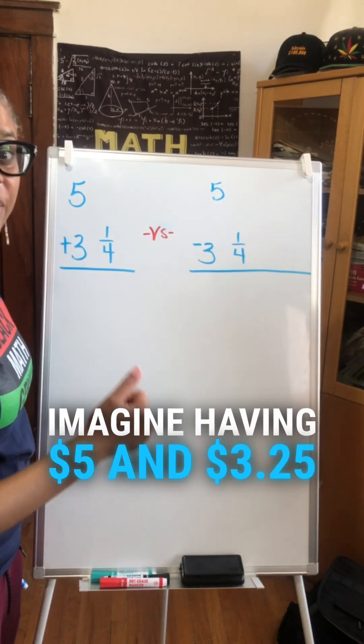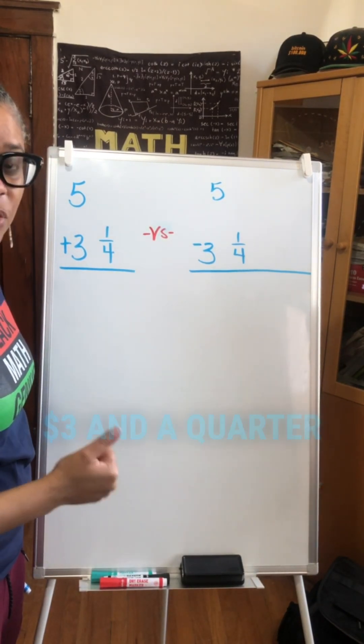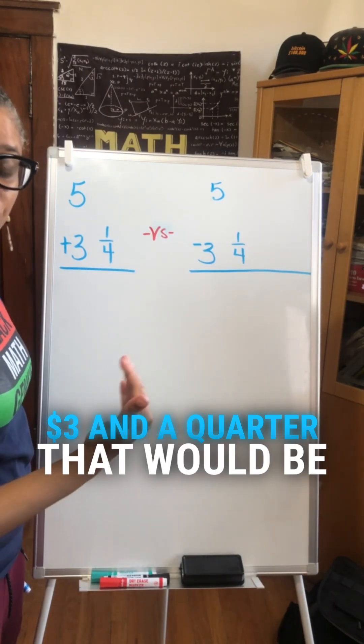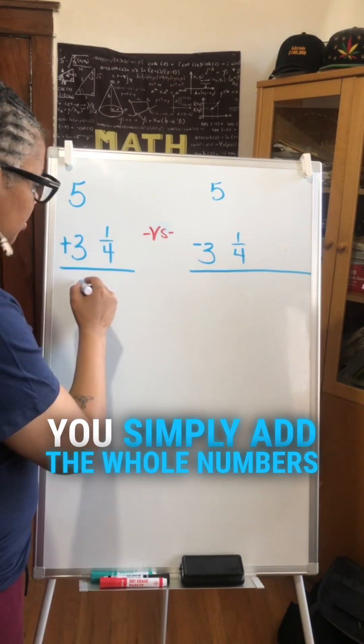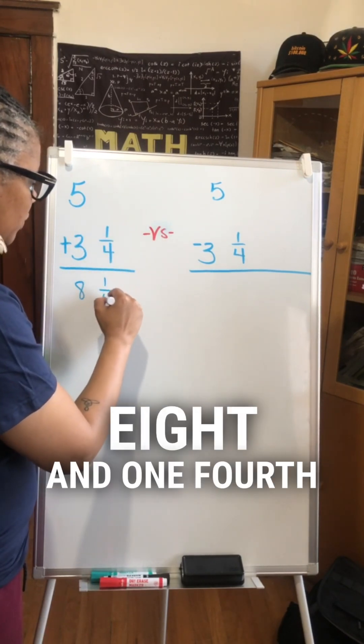So in this case we have 5 plus 3 and 1 fourth. Imagine having $5 and $3.25. That would be a total of $8.25. You simply add the whole numbers, 8 and 1 fourth.